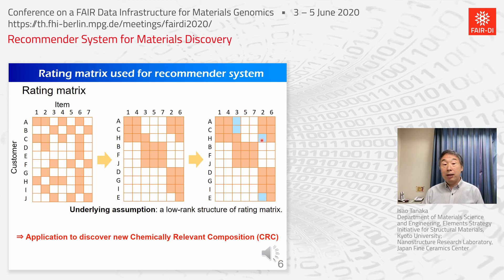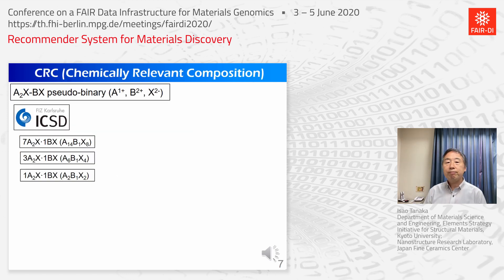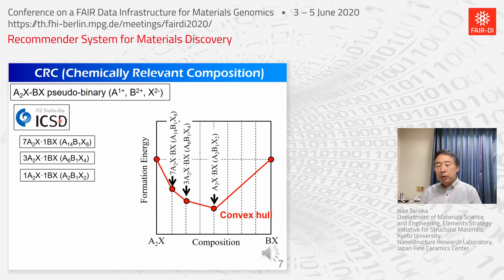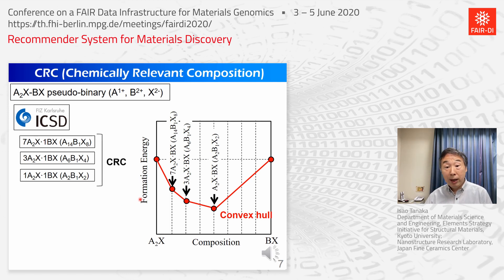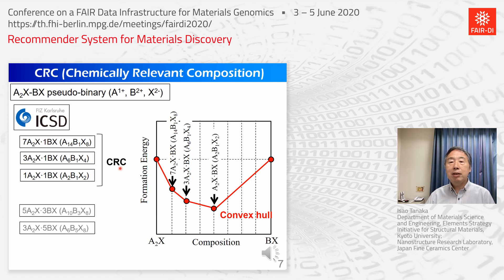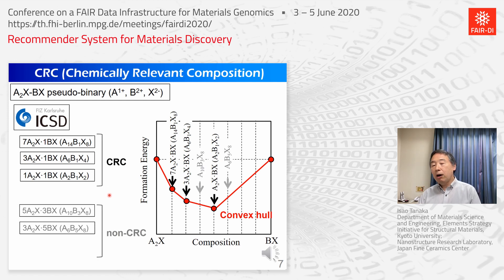We use this algorithm for discovery of new chemically relevant compositions. If you look at a database like ICSD for a pseudo-binary system, you can find compounds registered there. From a theoretical viewpoint, these compounds may be located on the convex hull of formation energy. They can be called chemically relevant compositions, or CRC. For other compositions not located on the convex hull, they may not be CRC. This is a very simple definition of chemically relevant composition.